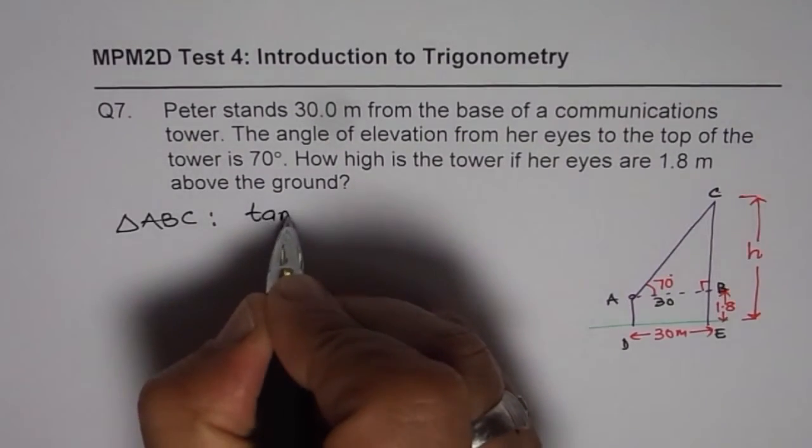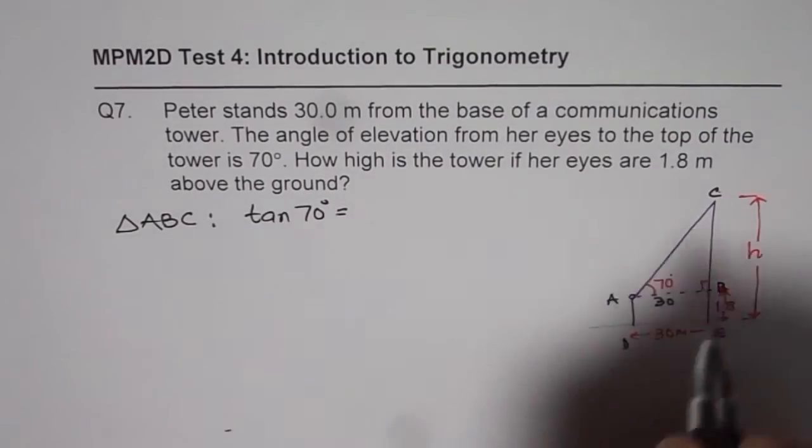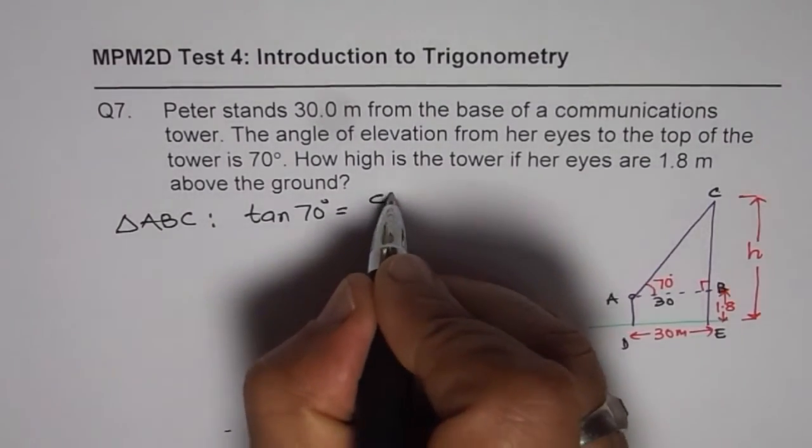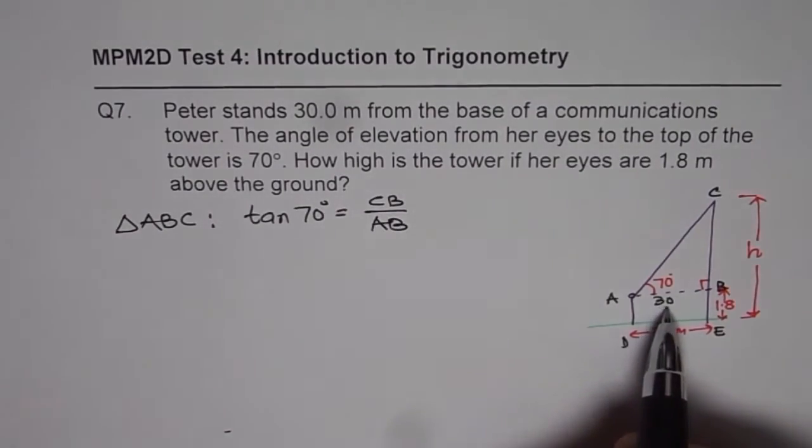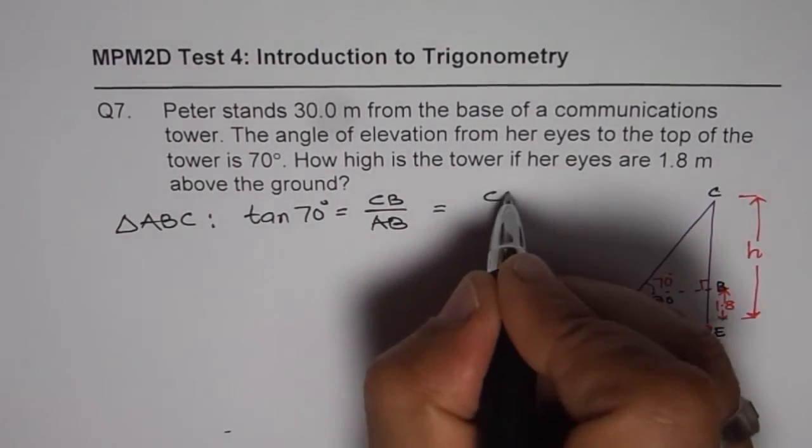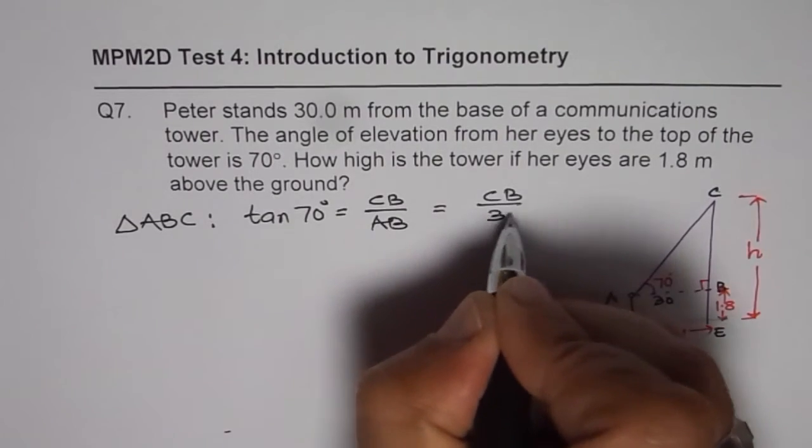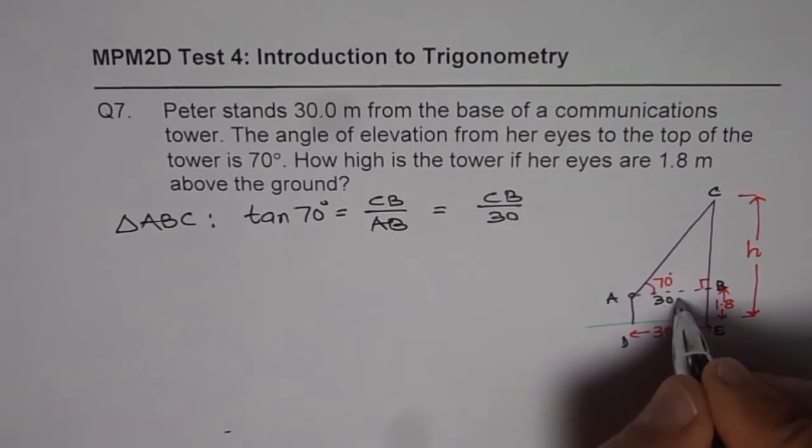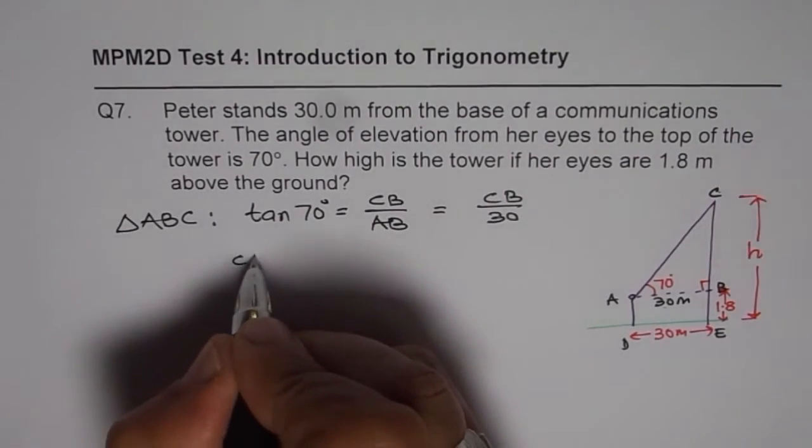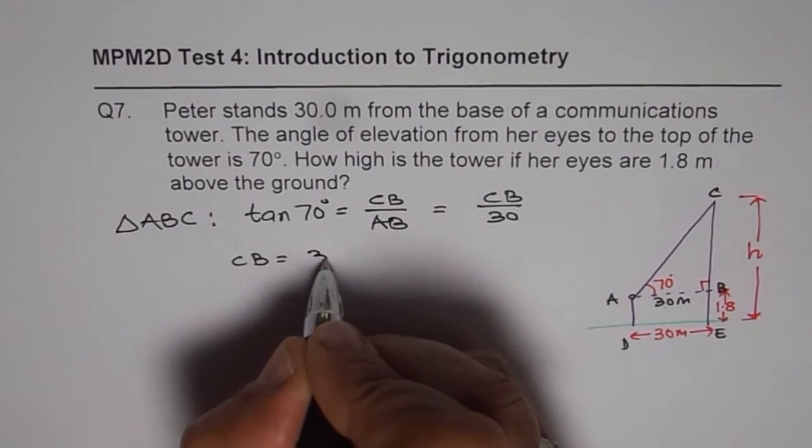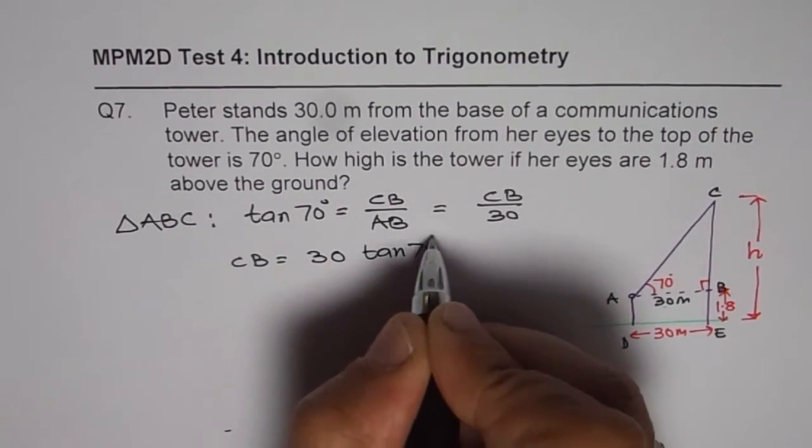So tan of 70 degrees is equal to CB over AB. Now AB is known to us as 30 meters. So we can write this as CB over 30. CB therefore will be equal to 30 meters times tan of 70 degrees.